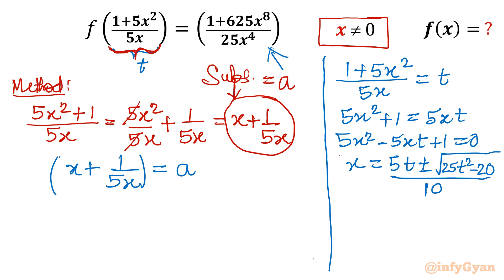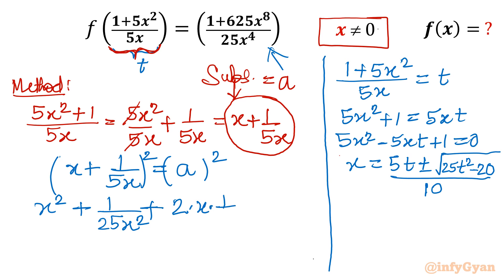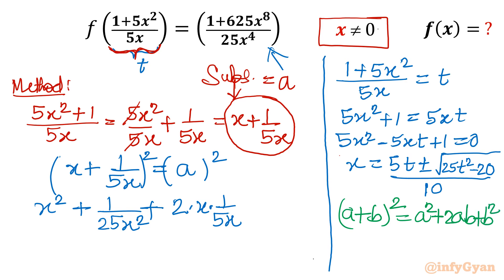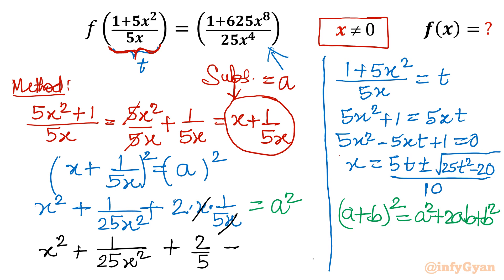Now I will square both sides. Squaring a = x + 1/(5x) using the identity (A + B)² = A² + 2AB + B² gives: x² + 1/(25x²) + 2·x·(1/(5x)) = a². The middle term simplifies: 2·x/(5x) = 2/5. So we get x² + 1/(25x²) + 2/5 = a².